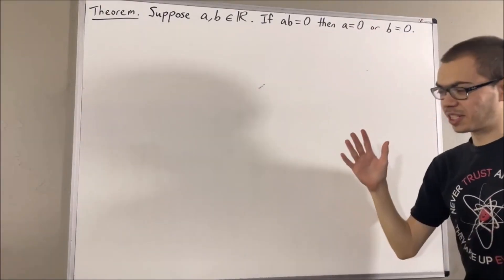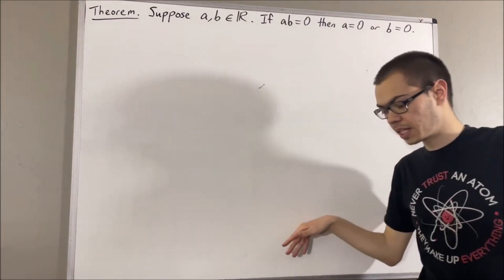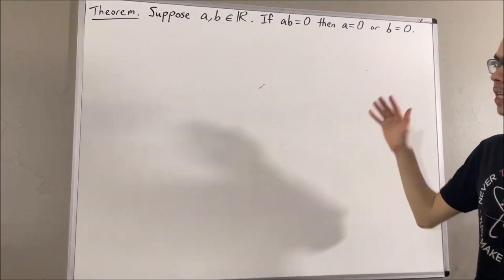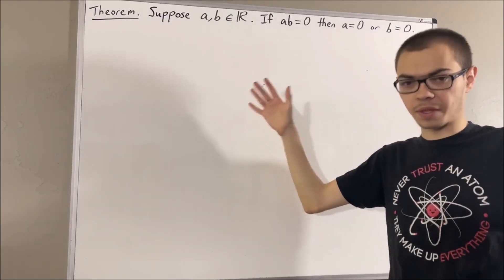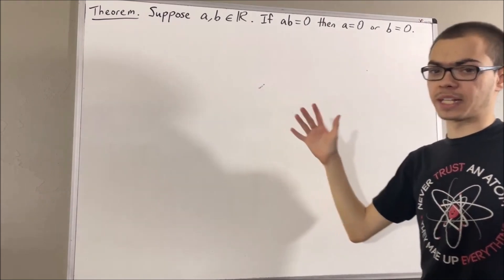In this series, we are using a list of 10 axioms for the real number system, and I'll leave that list of axioms in the description of the video below. In this video, we're not going to need to refer to any of the axioms directly, but we are going to be using some results that we have proven from those axioms.